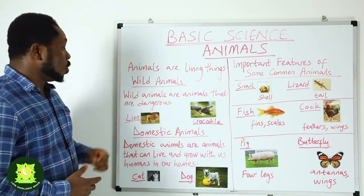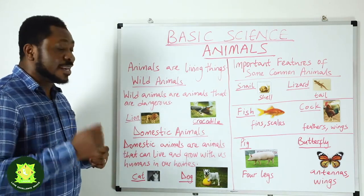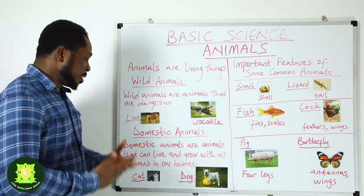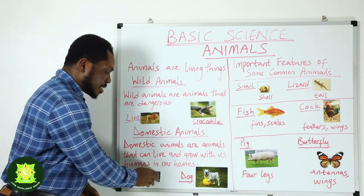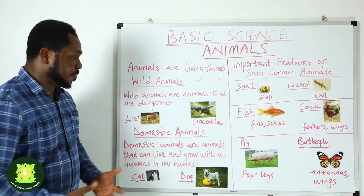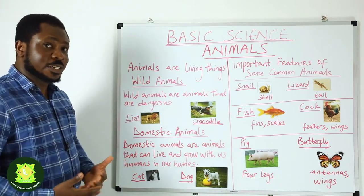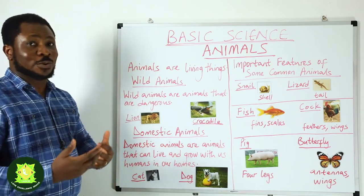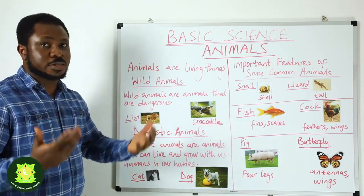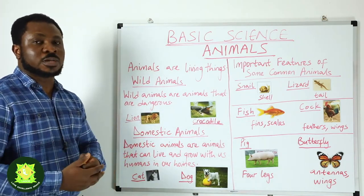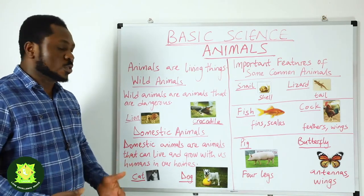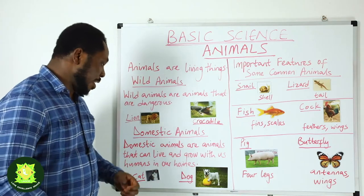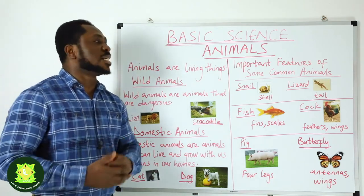We also have domestic animals. Domestic animals are animals that can live and grow with us humans in our homes. Examples of domestic animals are cats — a cat can live with humans in the home — and dogs. We also have birds, and some fish can be put in an aquarium in the home. The cat and dog are good examples of domestic animals because they can live with humans in our homes.